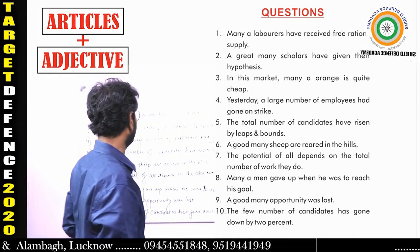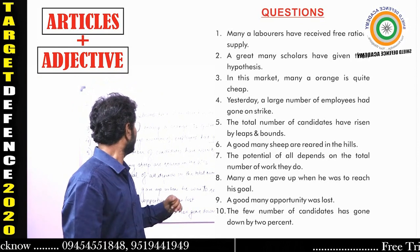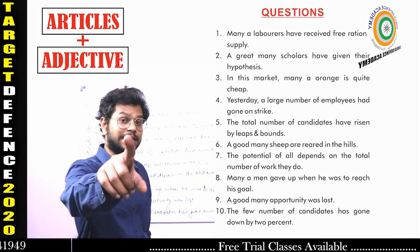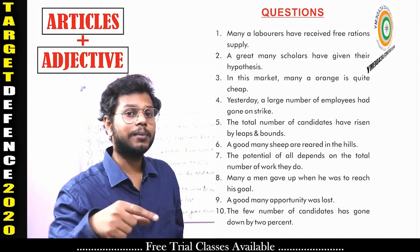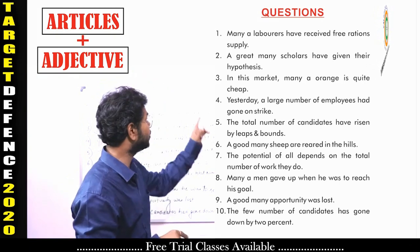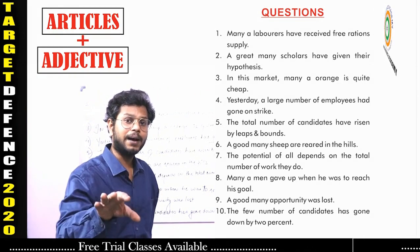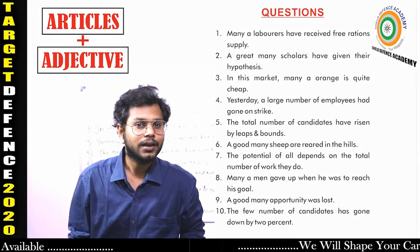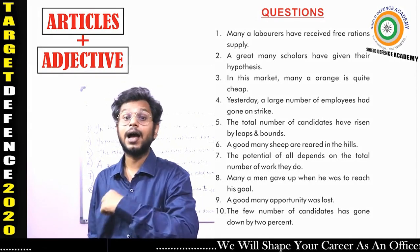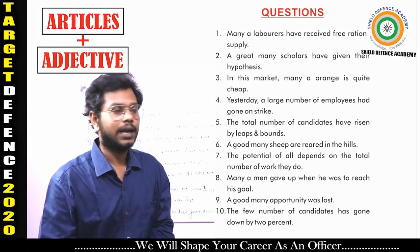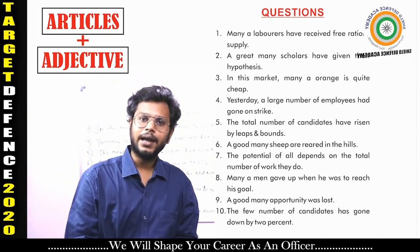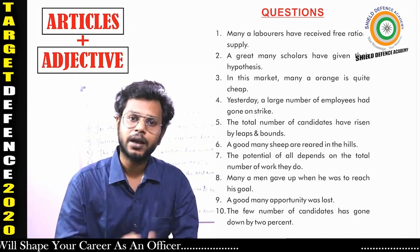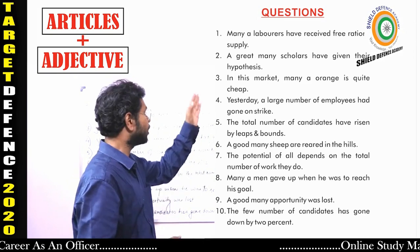Question 5: 'The total number of candidates have risen by leaps and bounds.' 'The number of' is given. Remember: after 'The number of,' the verb should be singular. 'Have' is plural — that is wrong. It should be 'has.' Correct: 'The total number of candidates has risen by leaps and bounds.' Leaps and bounds means exponential rapid growth.